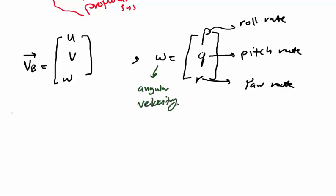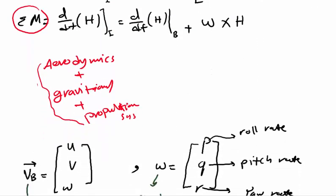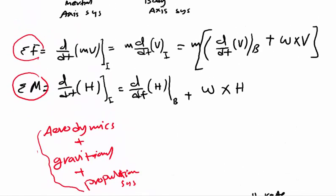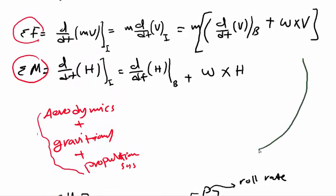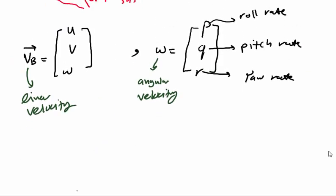We have the linear velocity components u, v, w and now when we substitute these two vectors into the two equations, we obtain the following relations.